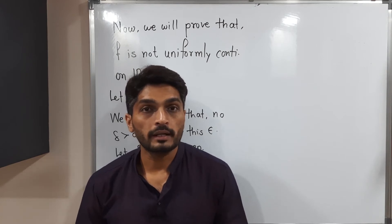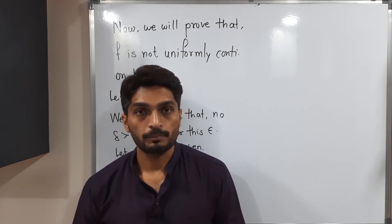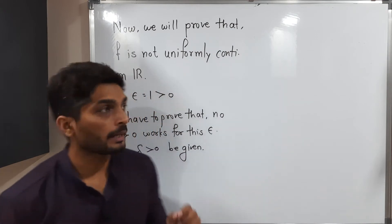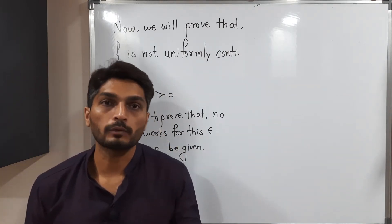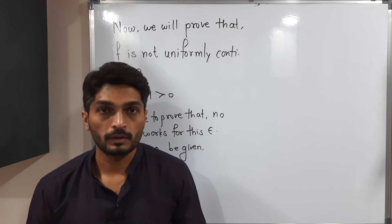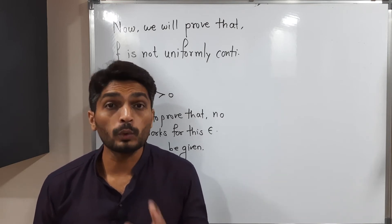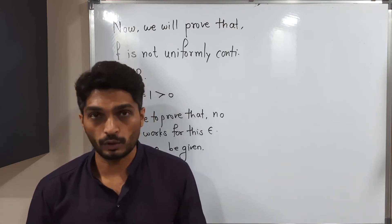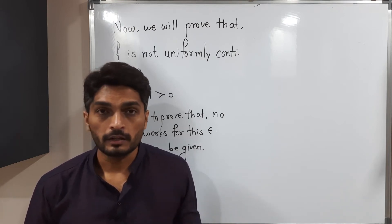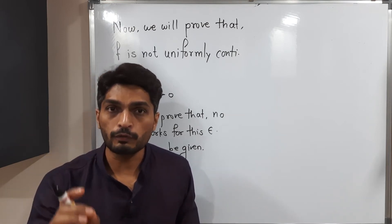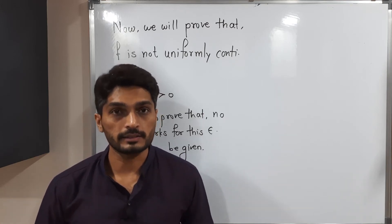Now we will prove that f is not uniformly continuous. For that, I have taken epsilon equal to 1, which is clearly greater than zero. We have to prove that no delta works for this epsilon — that is, for any delta, the epsilon-delta definition of uniform continuity will not be satisfied.